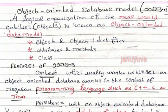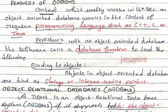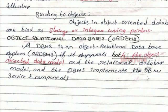Object-oriented database features: attributes, class, and context. It is programming-language based. Features include context, program language, database functions, and binding. Data types include object, string, and integer. This extends to the object-relational database model and DBMS.